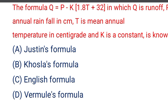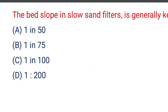Next question: the formula Q = (P - K) × (1.8T + 32), in which Q is runoff, P is annual rainfall in centimeters, T is the mean annual temperature in centigrade, and K is a constant, is known as — option A Justin's formula, option B Khosla's formula, option C English formula, option D Vermily's formula. The correct answer is option B, Khosla's formula.